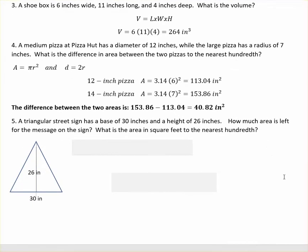And finally, the triangular street sign has a base of 30 inches and a height of 26. I've shown a picture over there. How much area is there for the message on the sign? What is the area in square feet to the nearest hundredth? They gave it to us in inches. So the first thing we're going to do is find the area of the triangle, which is just base times height, 30 times 26 divided by 2. That gives us 390 inches squared.